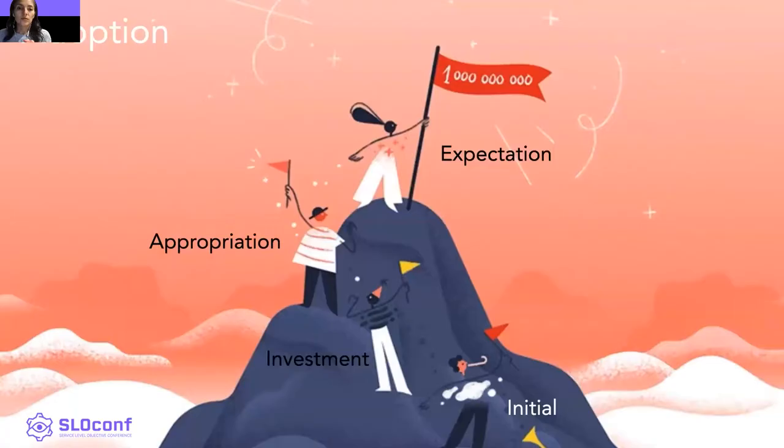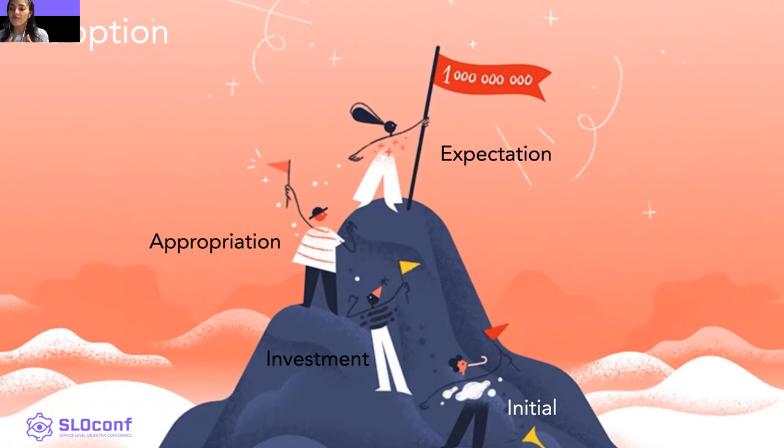Let me start with adoption. We have identified four stages in the stories of others and in our own journey. In the next slides, I am going to talk about them. Specifically, I am going to show some signals that allow you to know if you are at an initial, investment, appropriation, or expectation level.